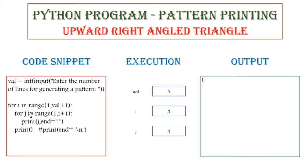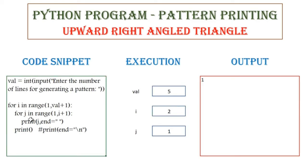Next, the loop goes on. Now j will be 2, and since condition 2 is not less than i plus 1 — which is 2 — the control exits from this inner for loop. And then it executes the print statement where it is going to print a new line. So the output is now going to be printed on the next line. The value of i now becomes 2.